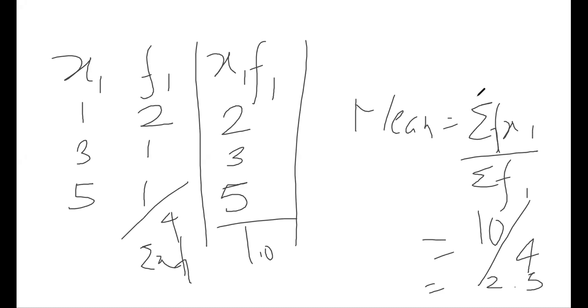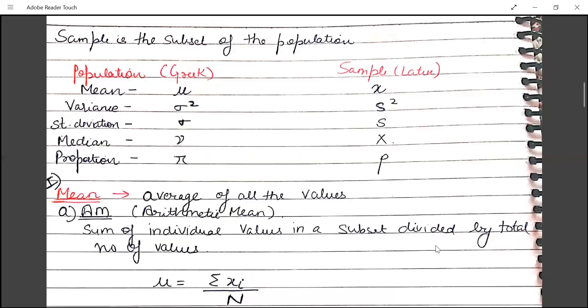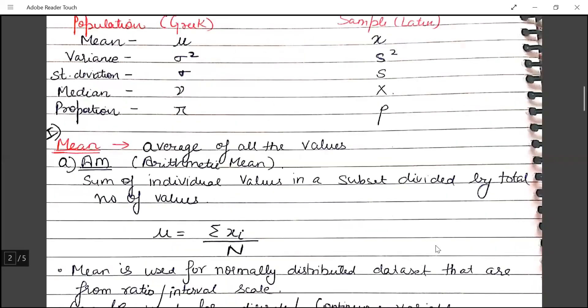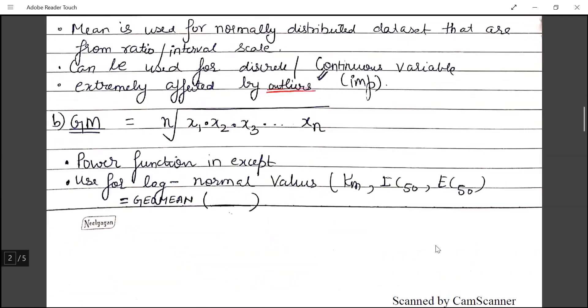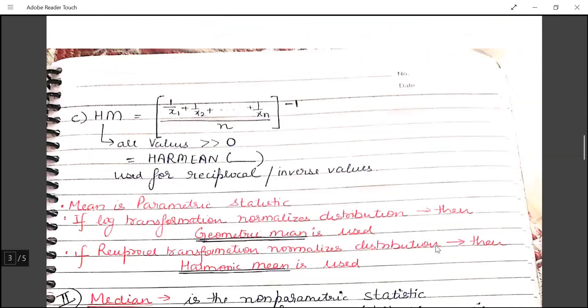To summarize the formulas: arithmetic mean is sigma(xi) divided by n, and these means are very much affected by outliers. Geometric mean is the multiplication of all terms raised to the power of 1 over the number of terms. In case of harmonic mean, the formula is n divided by the sum of reciprocals of each value.